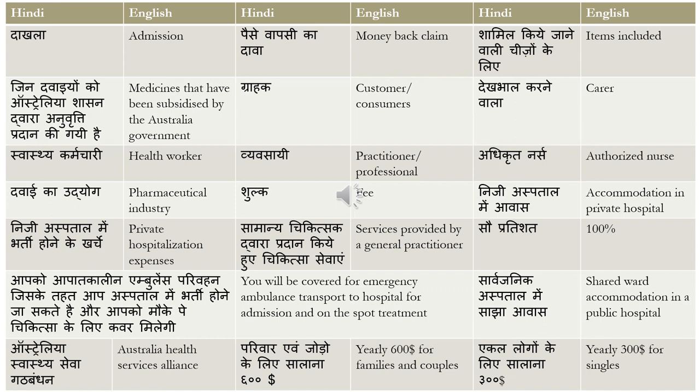'Australia swasta sewaa gatabandhan' means Australia health services alliance — 'gatabandhan' is alliance. 'Parivahan evam jodo ke liye salana cheso dollar' means yearly six hundred dollars for families and couples — 'parivahan' is family, 'jodo' is couples, and 'salana' is yearly. This is like an allowance in that context. For singles, 'ekal logon ke liye salana three hundred dollar' means yearly three hundred dollars for singles — 'ekal' means singles.